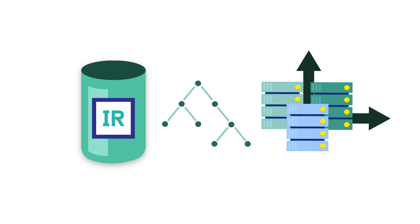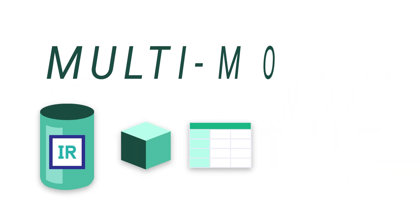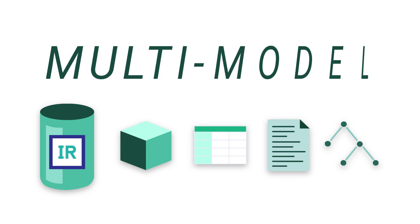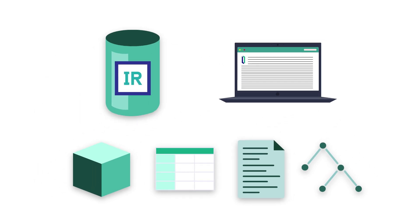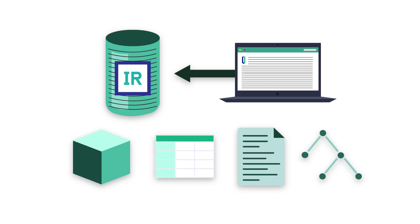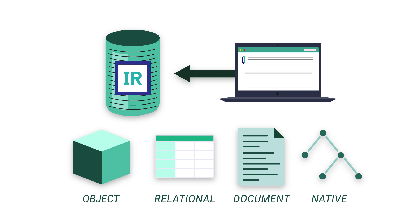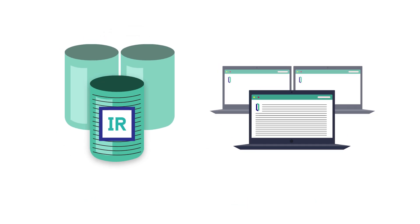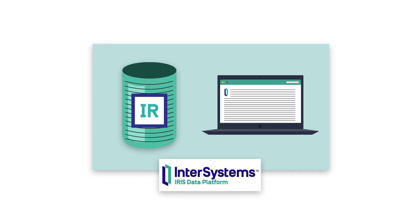What makes its flexibility shine is InterSystems IRIS's multi-model capability. That is, for a given set of code and a given set of data, your code can access that data as multiple different models, including object, relational, document, or even native access to the underlying data structures. There's no need to separate your data or your code — it can all be done from a single environment.